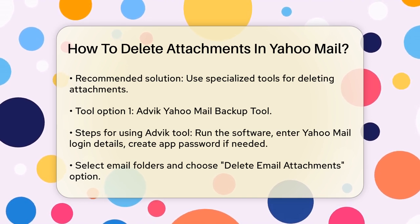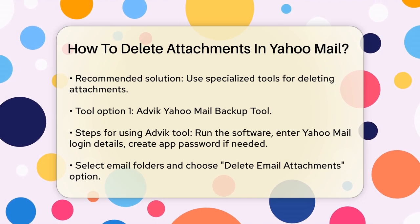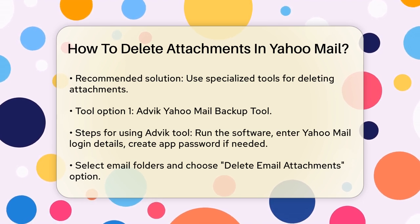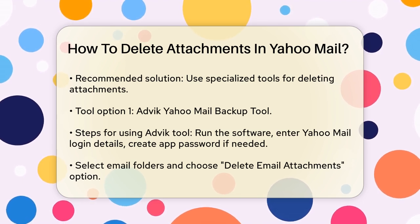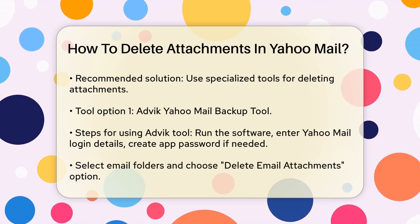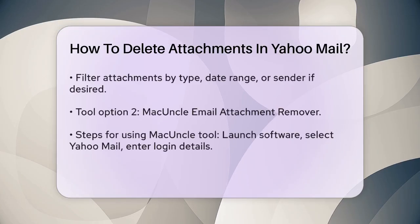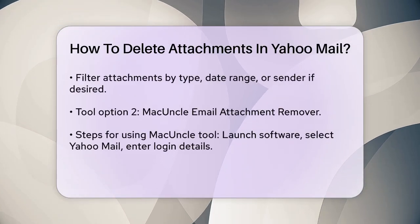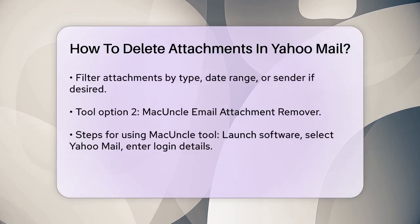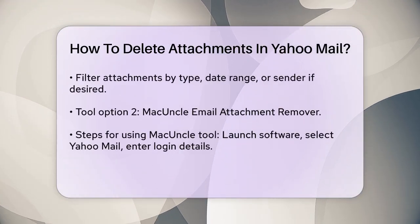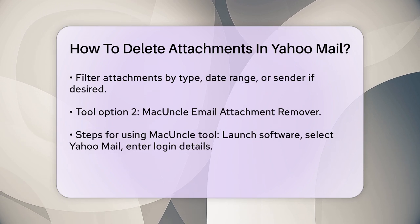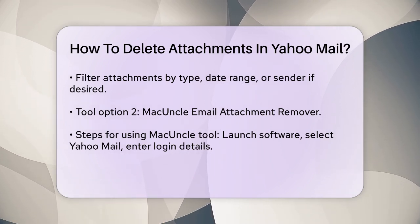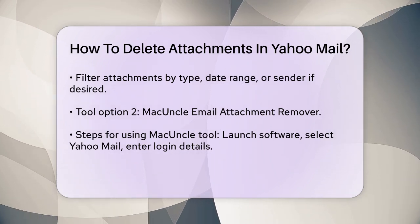You might need to create a new app password for this purpose. Next, select the email folders from which you want to delete attachments. Choose the 'Delete Email Attachments' option from the Saving Options list. If needed, apply filters to delete specific types of attachments, such as .pdf or .doc files, or attachments from a particular date range or sender.